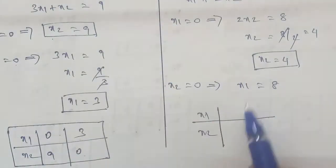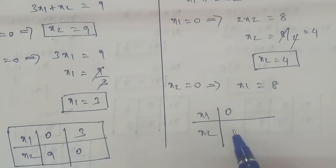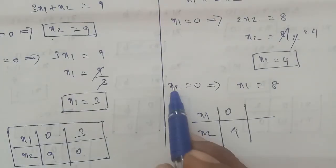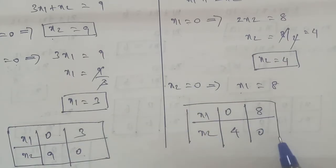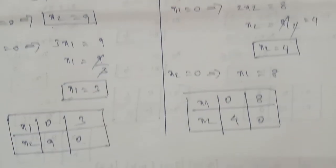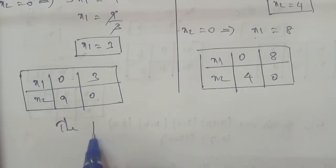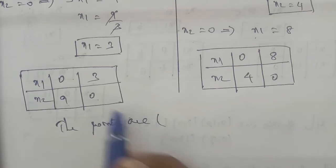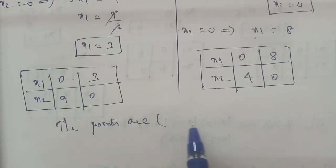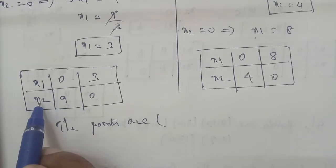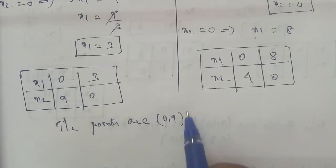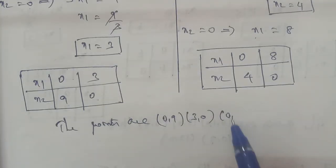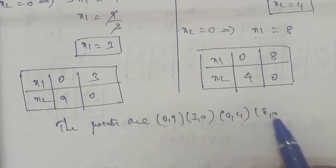So the table of points for the second constraint: when x1 is equal to 0, x2 is equal to 4; when x2 is equal to 0, x1 is equal to 8. The points to note are: X-axis is x1, Y-axis is x2. The points are (0,9) and (3,0) for the first constraint. Next points are (0,4) and (8,0) for the second constraint.